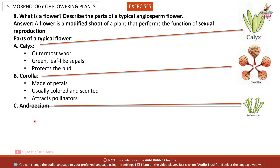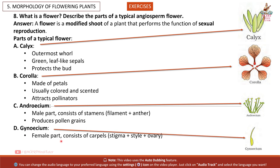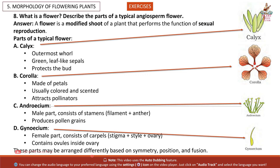(c) Androecium — male part, consists of stamens (filament + anther), produces pollen grains. (d) Gynoecium — female part, consists of carpels (stigma + style + ovary), contains ovules inside the ovary. These parts may be arranged differently based on symmetry, position, and fusion.